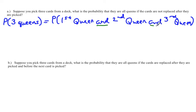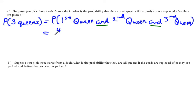Anytime you have 'and,' you can use the multiplication principle, though I don't normally use it unless the sample space is too large to write out. So let's look at the probability that the first card is a queen. Since there are four queens in a deck and 52 cards total, the probability that the first card is a queen is 4/52.